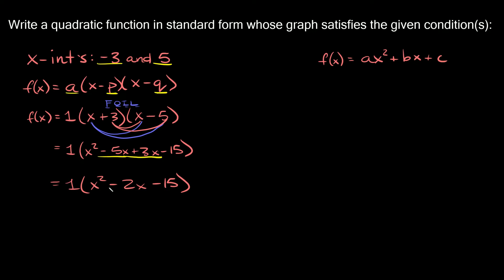Alright, and now we just have 1 times all this crap over here, but remember when you multiply by 1 nothing changes right, so our final answer right here is f of x is equal to x squared minus 2x minus 15. Alright, so there's your function in standard form.